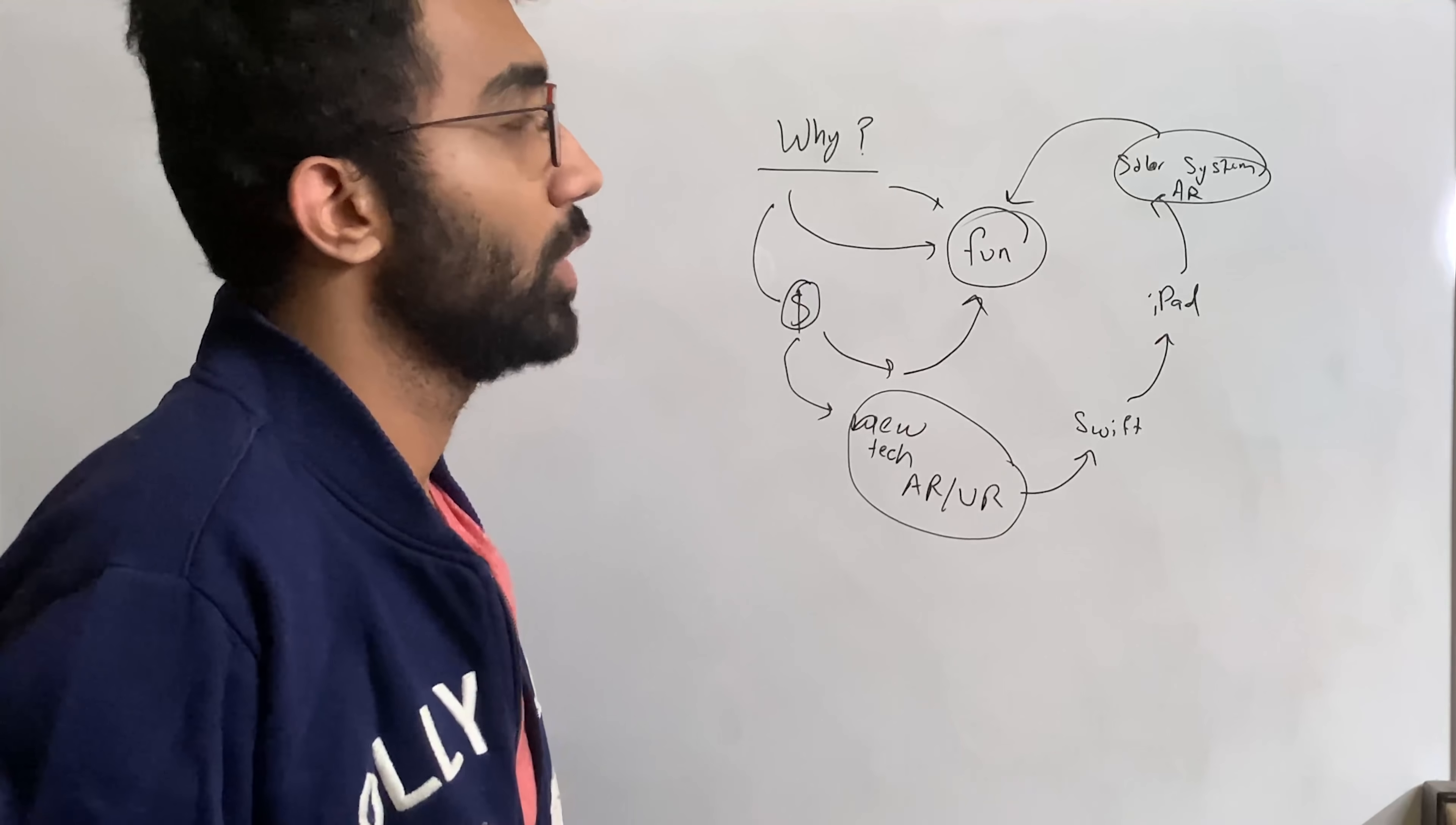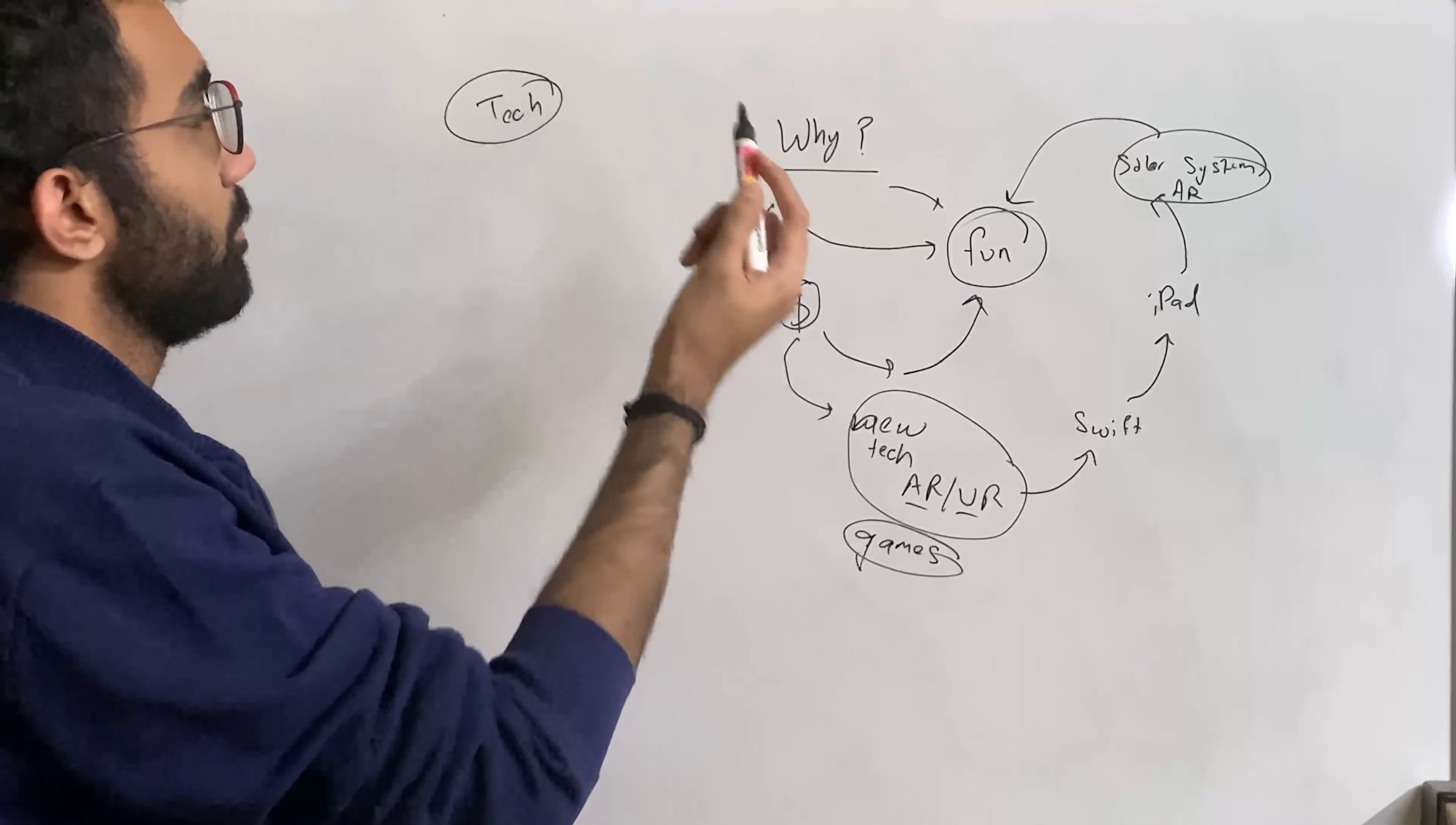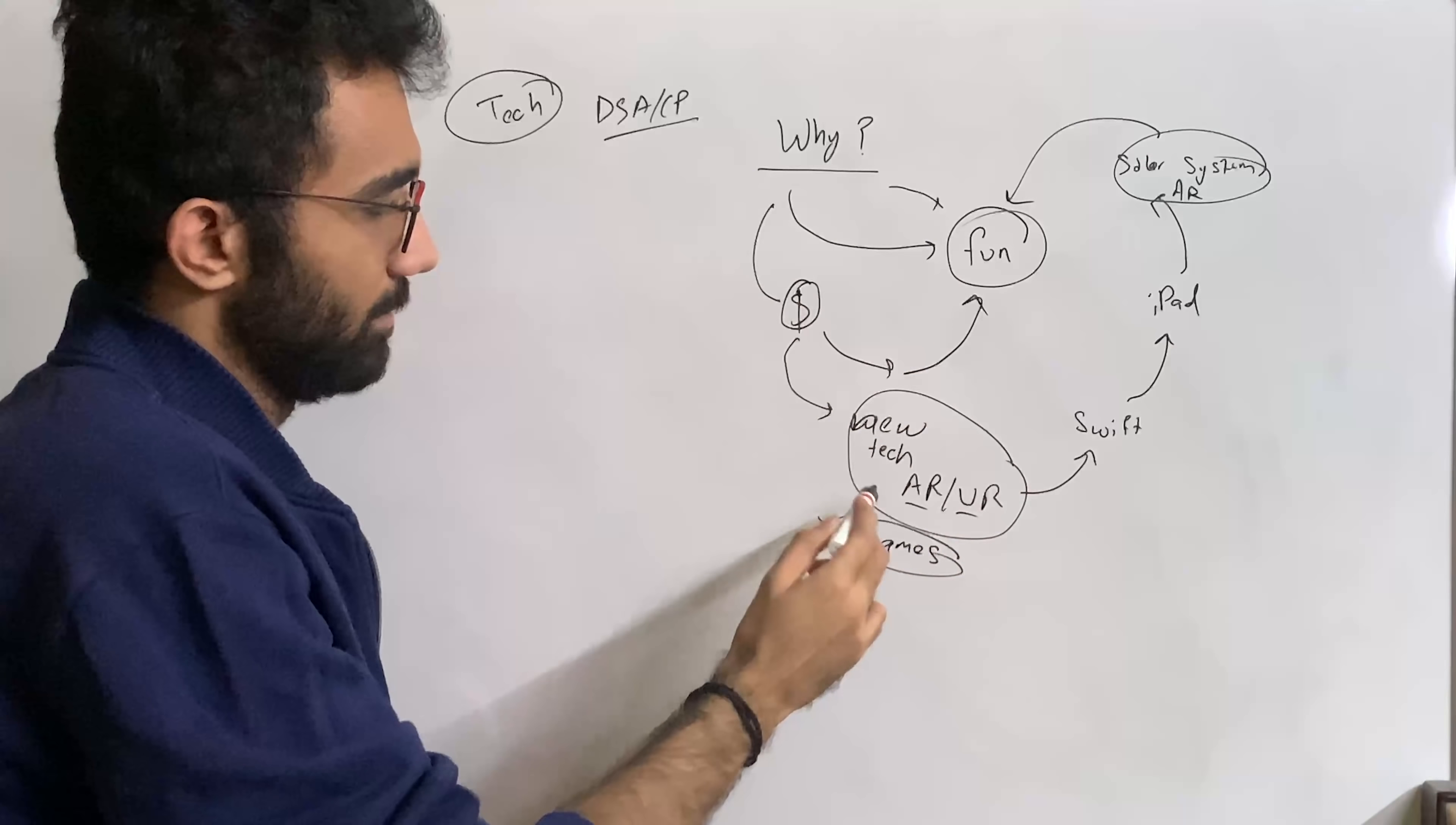Once you discover your why and can link it with fun, you have to figure out if your tech stack relates to that fun activity. For example, if you're interested in AR/VR or games and you want to build your own platformer game, but you're learning about DSA or CP, that's not going to get you far. You have to start or somehow link it with games in this example.